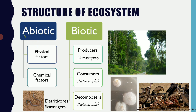Abiotic components are the non-living components, including physical factors like air, water, light, land, temperature, and humidity. The chemical factors include inorganic elements such as nitrogen, sulfur, and phosphorus, as well as organic substances like carbohydrates, fats, and proteins. All of these chemical elements that we absorb or consume make up the chemical factor. Together, the physical and chemical factors make up the non-living or abiotic component of an ecosystem.